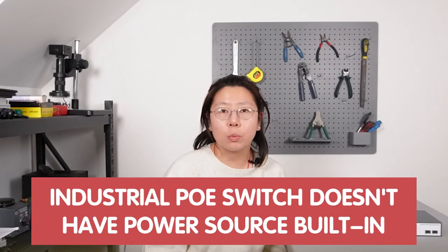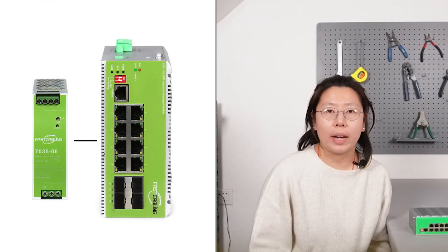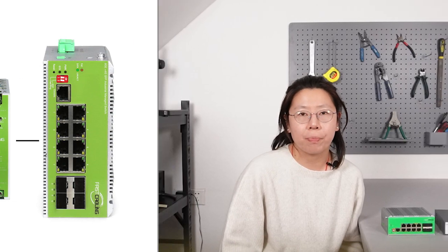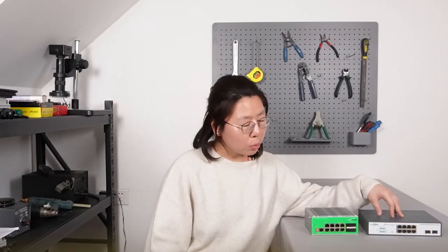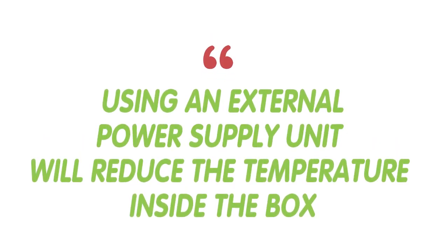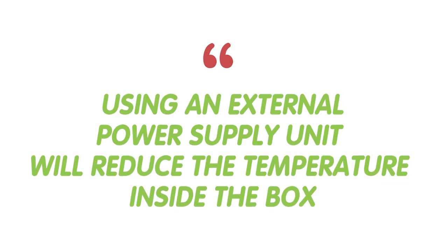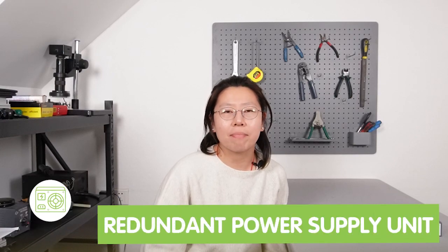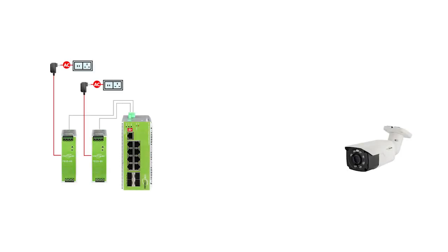The industrial PoE switch doesn't have a power source built in, that's why it needs to use an external power supply unit to power the switch. A power supply unit will generate heat, so using an external power supply unit will reduce the temperature inside the box. Some industrial PoE switches even support a redundant power supply unit — if one power supply unit is down, the other one will take over immediately.